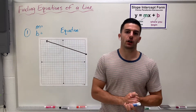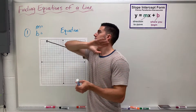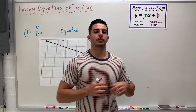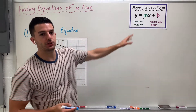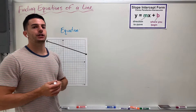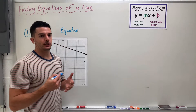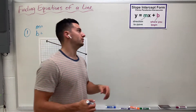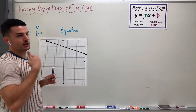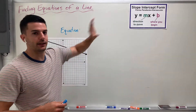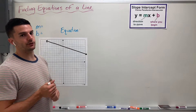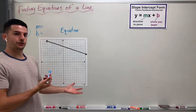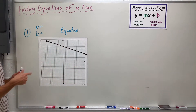All right, Algebra 1 crew, we are on to Unit 3, and Unit 3 is still dealing with graphing lines, but now we're going to be more about finding the equation of a line, which we talked about a little bit. It's going to get a little bit trickier because there are going to be situations where we're not given much information about the line, but we're still going to be responsible to find this equation. So we're going to start with one that's a review from Unit 2, and then we'll get on to some newer stuff.